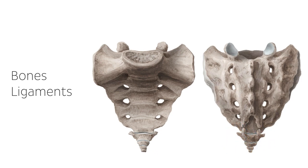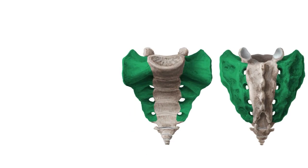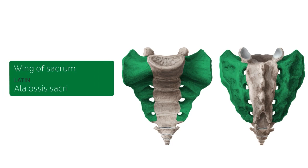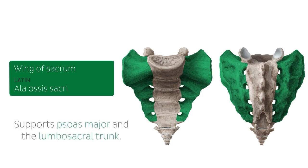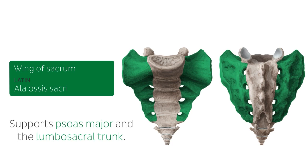The first structures we're going to be highlighting on these two images are the wings of the sacrum. You can clearly see why we call them wings — they spread on both sides of the bone and look like two wings. These are the structures that will be supporting the psoas major muscle and also the lumbosacral trunk.